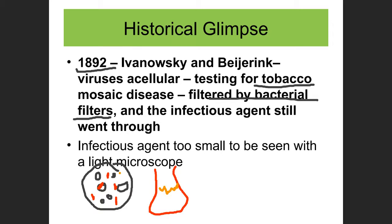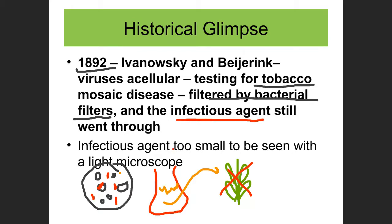They took the filtered fluid and gave it to a plant, thinking maybe the bacteria was so tiny it passed through the filters. The plant got sick. Whatever was causing the disease was still in the fluid. Their conclusion: something was going through the filters — an infectious agent smaller than bacteria. They called it a filterable infectious agent.